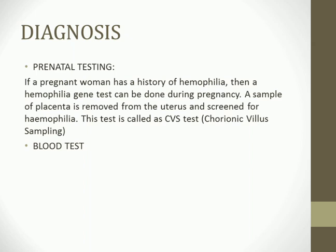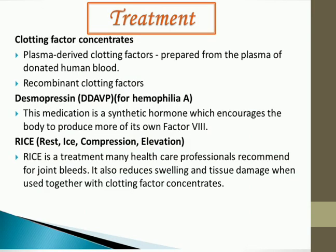The main treatment is giving clotting factor concentrates — whichever factor is deficient (Factor 8, 9, or 11). The main risk is transmission of infections such as HIV, since clotting factors are obtained from human blood. Plasma-derived clotting factors are prepared from plasma, while recombinant clotting factors are produced using bacteria or viruses.